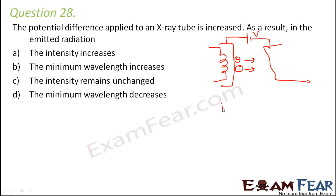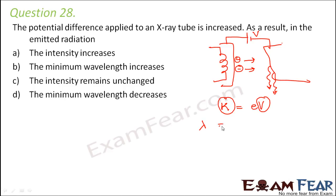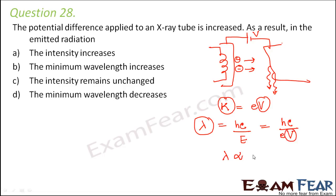When we increase the potential difference, the kinetic energy of the electrons hitting the target also increases, since kinetic energy equals e times V. These electrons hit the target to produce X-rays. The wavelength of the emitted X-ray is given by hc divided by eV, so lambda is inversely proportional to the potential difference.